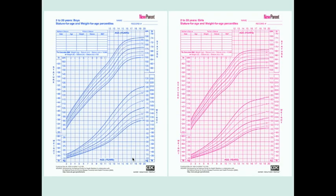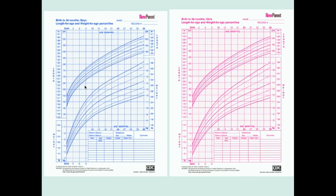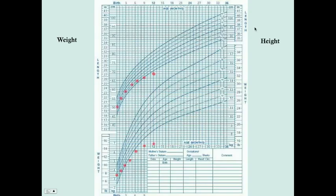This is the growth chart for children aged 2 to 20 years, but particularly when we're talking about failure to thrive, we're really going to be concerned about looking at this growth chart from birth to 36 months of age. This is an example of a growth chart of a boy who has failure to thrive. Note both the length and the weight.